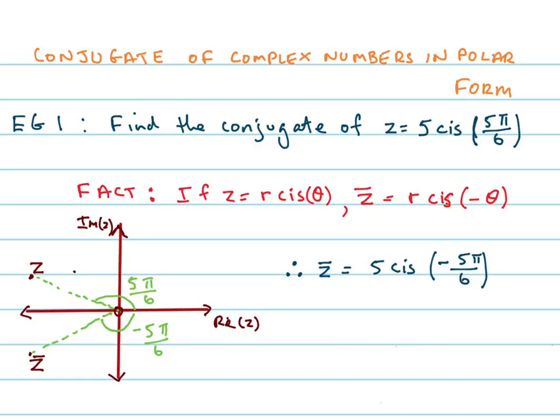Finding the conjugate of a complex number in polar form is really rather easy, especially when you consider the fact that I've got written here, which is: if z equals r cis theta, then the conjugate of z is equal to r cis negative theta.